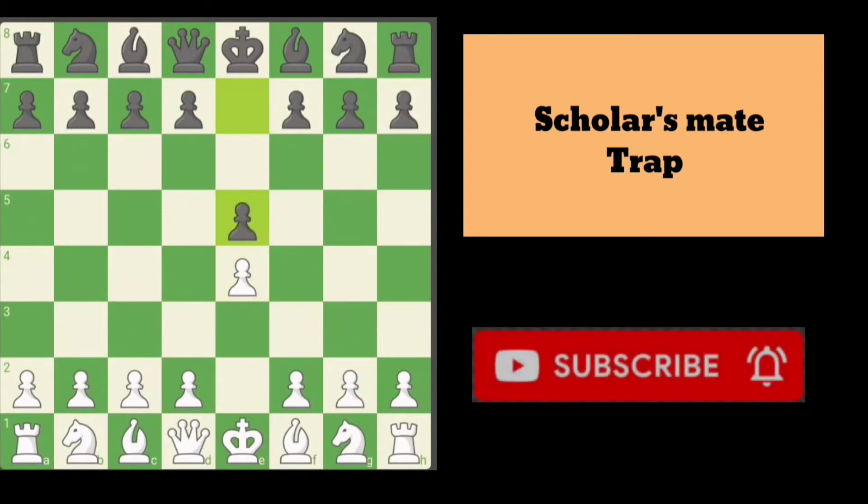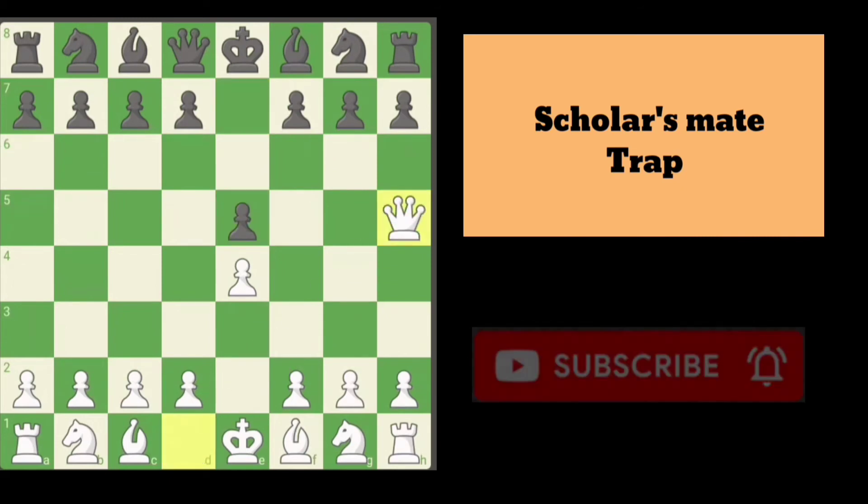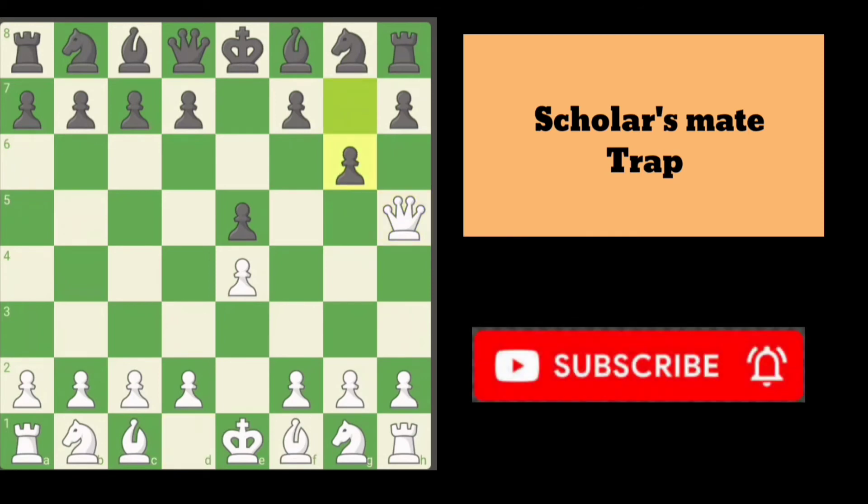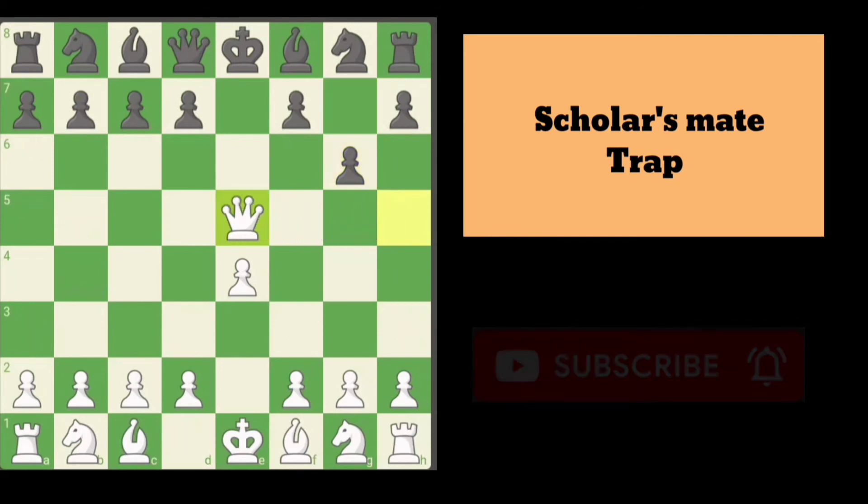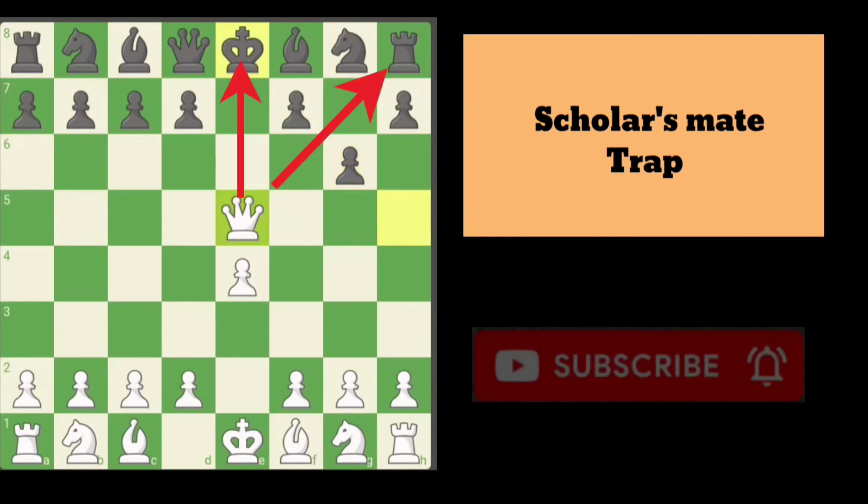Play e4, e5, but instead of bishop c4, play queen h5. If Black tries to attack your queen directly with g6, you don't need to take your queen back. Instead, play queen e5, checking the king and trapping the rook.